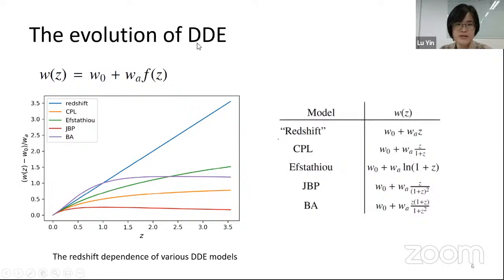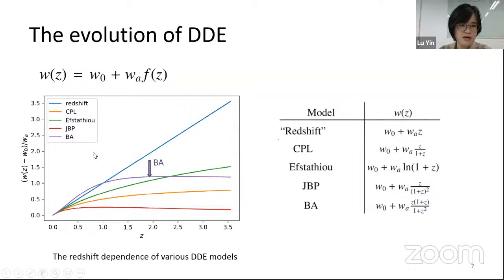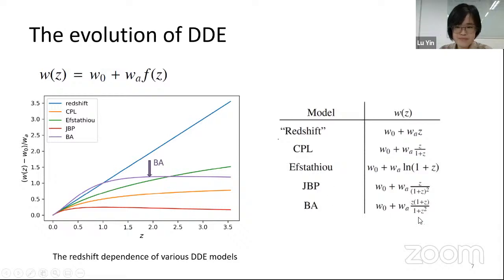Now we show the evolution of dynamic dark energy: W(Z) minus W_0 over W_A, which we consider as the F(Z) function. One interesting result is the BA model. At very low redshift, the F(Z) in the BA model increases very quickly, more quickly than the redshift-only model. But at a little higher redshift, the BA model is almost equal to a constant number one. So that is the very interesting part for this BA model.